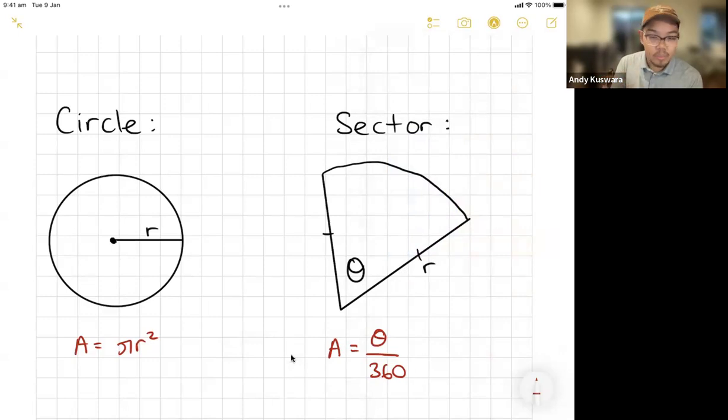And so a sector is just going to be a portion or a percentage or a fraction of your giant circle. So it's just going to be theta on 360 times pi r squared. Okay. So it's the area, but just a portion of it.